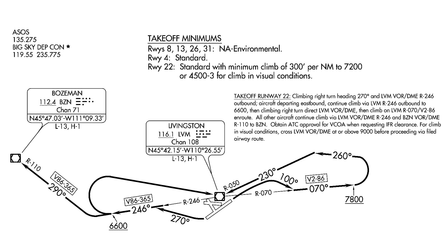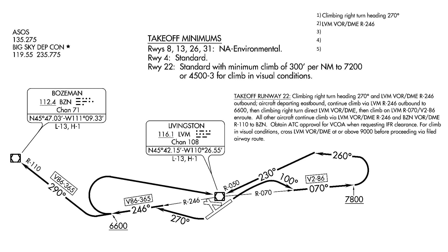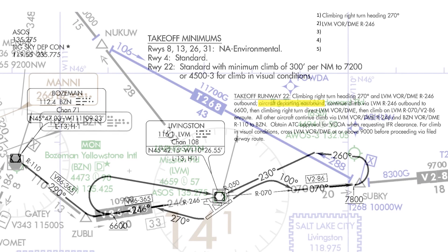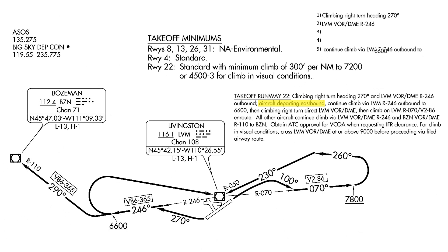Let's dive into the procedure itself to see why it might be missing from all these databases. The first instruction is a climbing right turn to heading 270, after climbing to 400 feet above the departure end of the runway. From that 270 heading, we intercept the 246 radial from the Livingston VOR and fly that outbound. The procedure notes aircraft departing eastbound — and since our flight plan takes us to Billings along Victor 2, we are eastbound. In that case, we continue the climb via the 246 radial until reaching 6,600 feet.